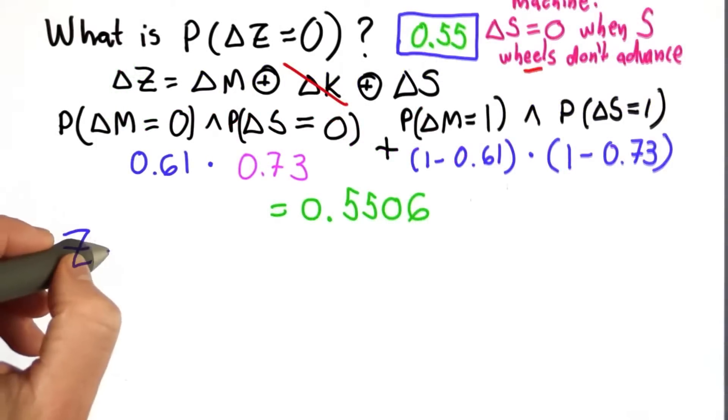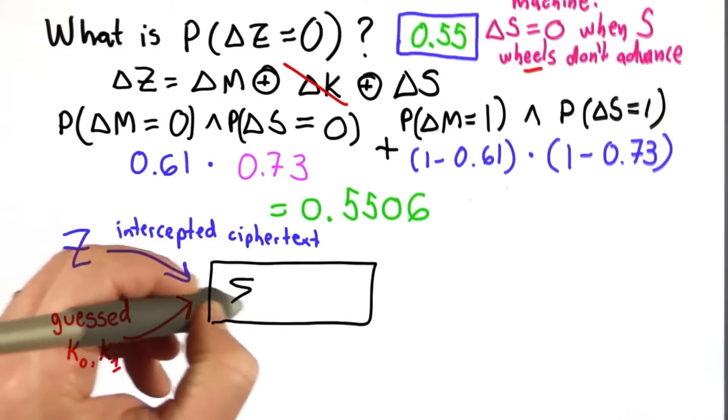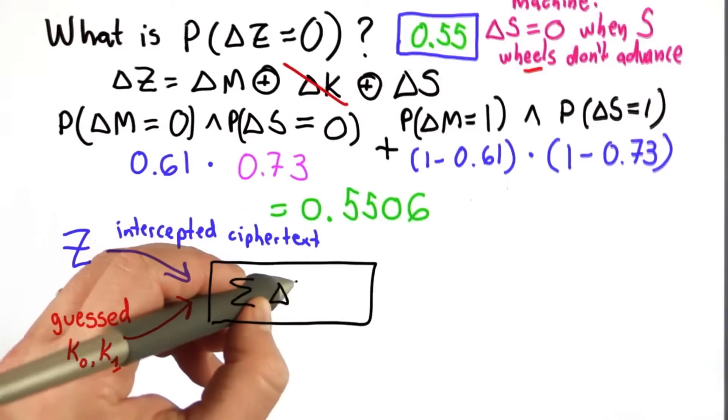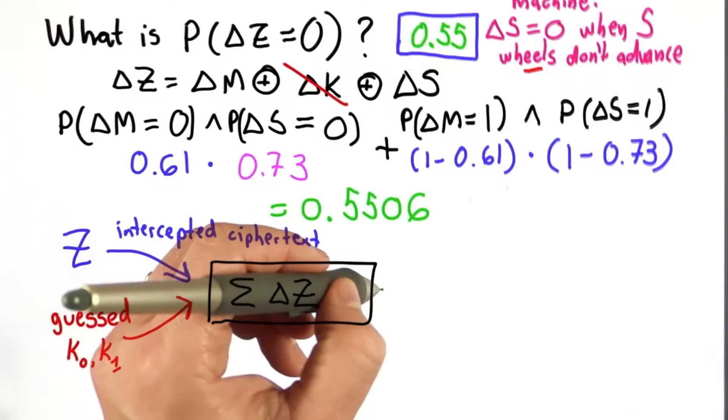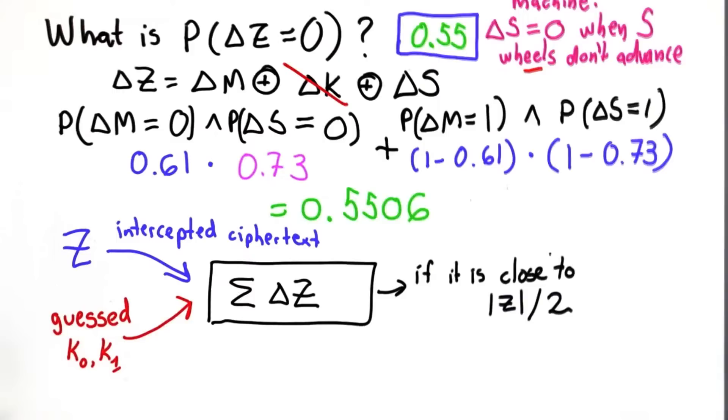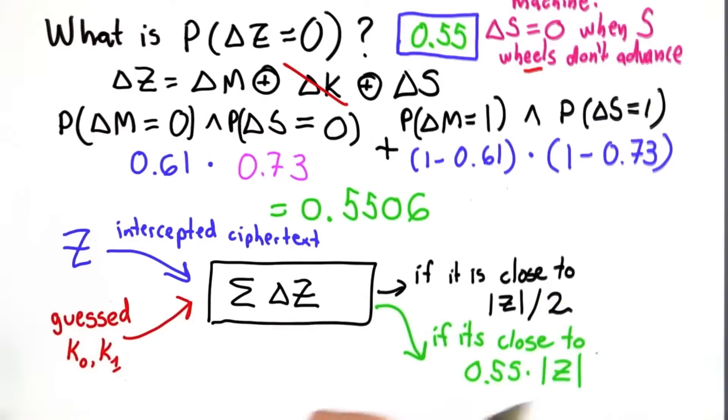So now all we have to do is feed in the intercepted messages. Our guesses for the starting position of the two keys, we need to compute a big summation of these values, of the delta Z values with those keys. And if it's close to the length of the message divided by 2, that means it was a bad guess. We weren't able to cancel out the key. If it's close to 0.55 times the size of Z, then it's a good key.